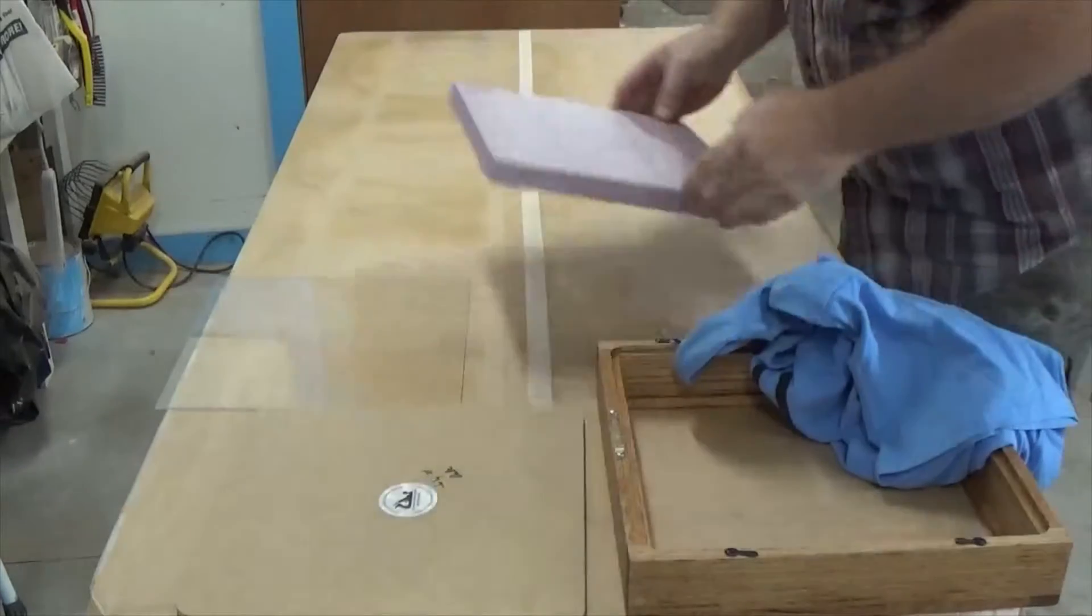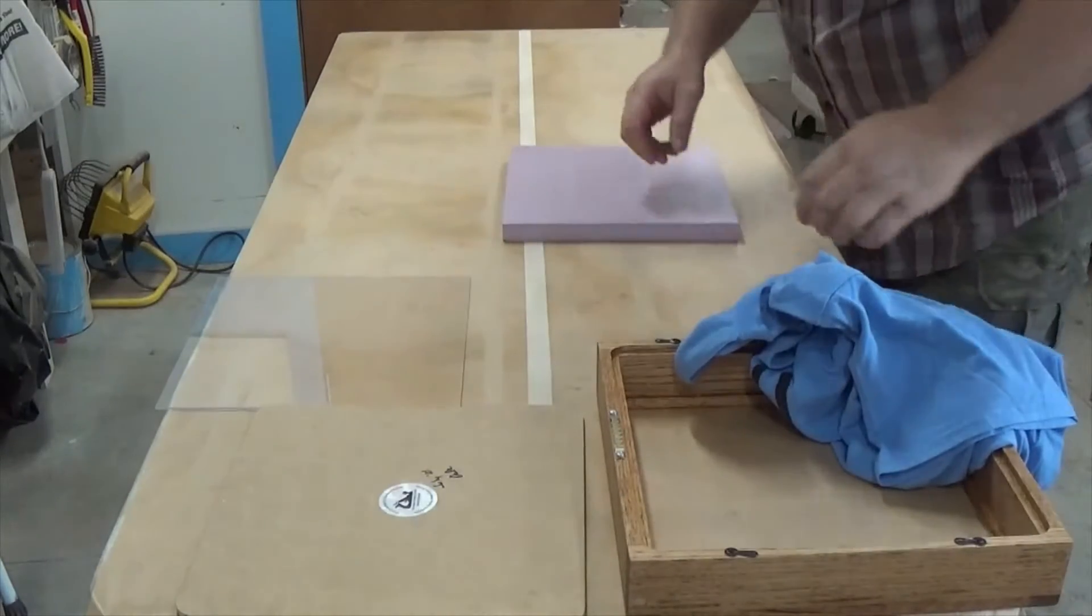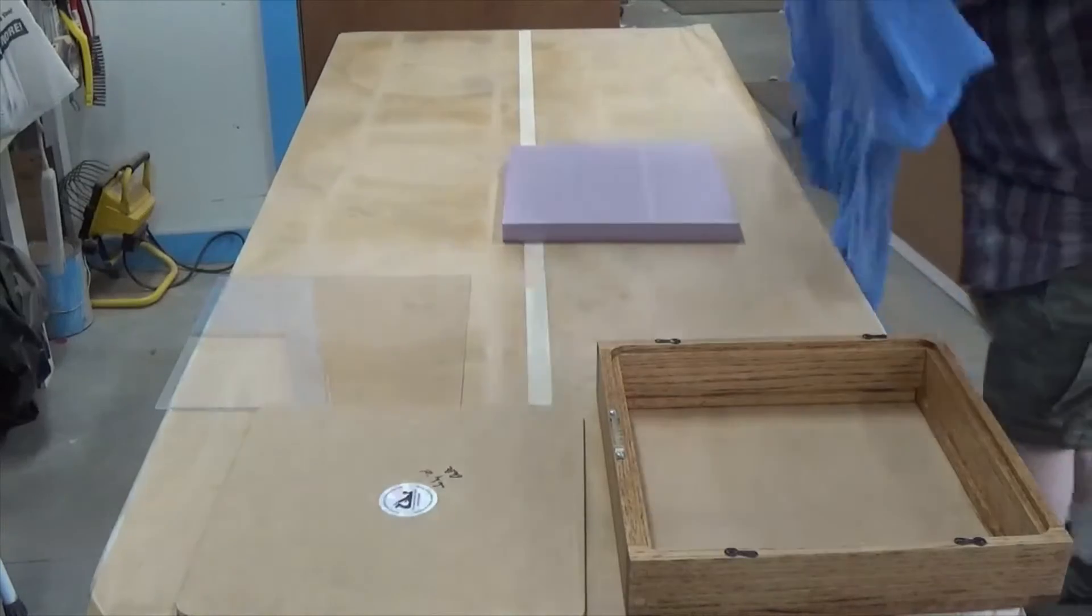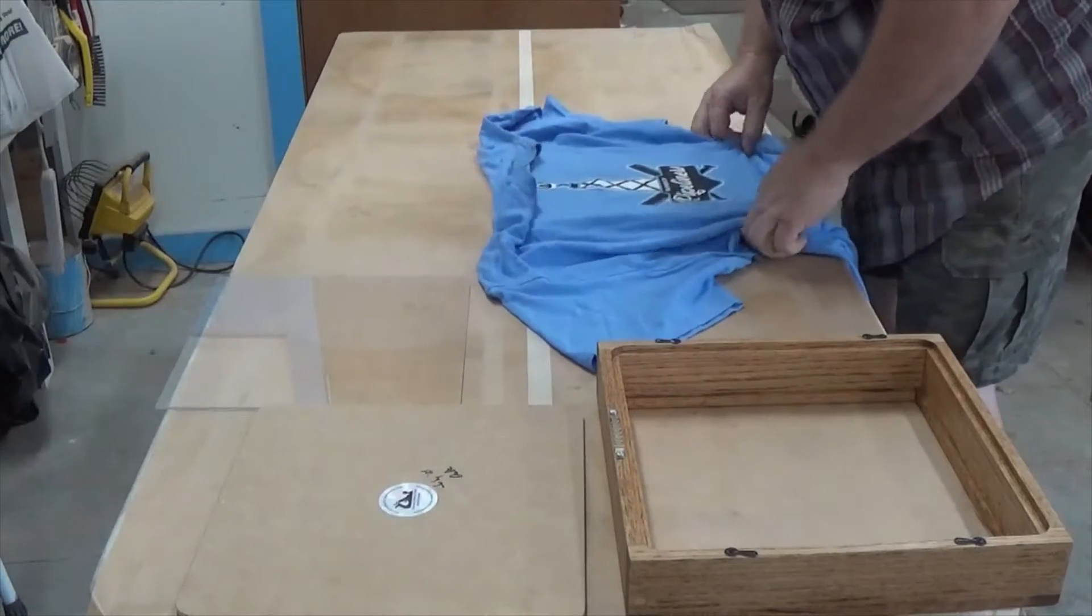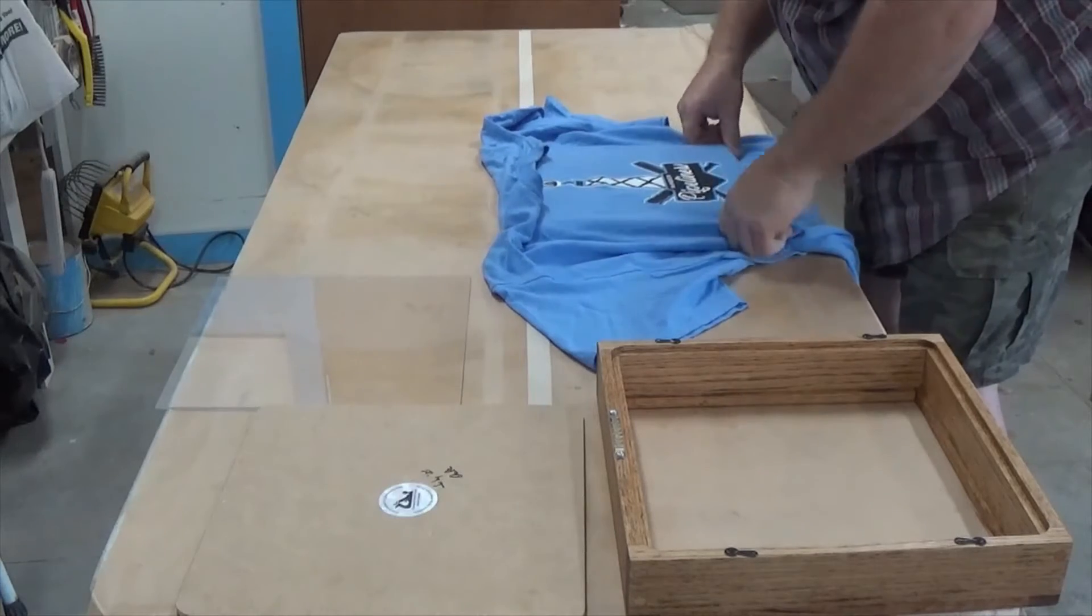The first thing you're going to do is take your piece of foam. You're going to lay the t-shirt on top of that. Get the design centered on there where you want it.